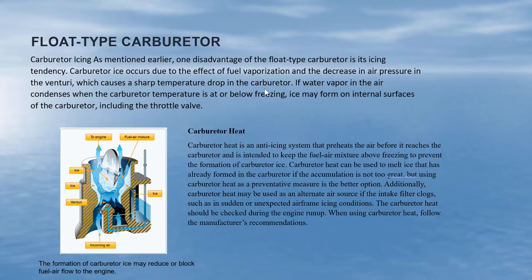If water vapor in the air condenses when the carburetor temperature is at or below freezing, ice may form on internal surfaces of the carburetor, including the throttle valve. Here's a picture representing the float type carburetor and the scenario of carburetor icing.